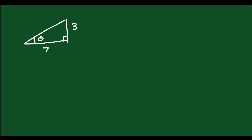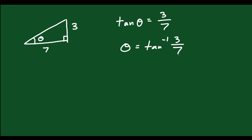Let's do another example. I have a right triangle with angle theta, opposite side = 3, and adjacent side = 7. To find theta, I need a trig ratio with opposite and adjacent — that's tan. Tan theta equals opposite over adjacent, so 3 over 7. Therefore, theta equals tan inverse of 3 over 7. Use your calculator and you get approximately 23.2 degrees.